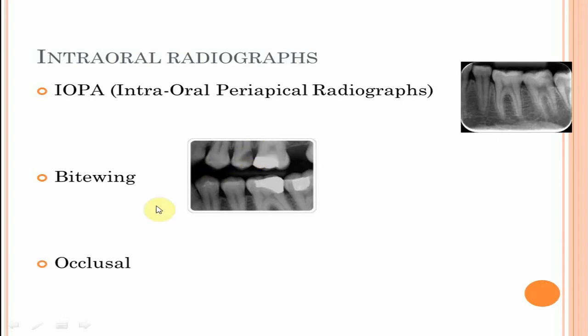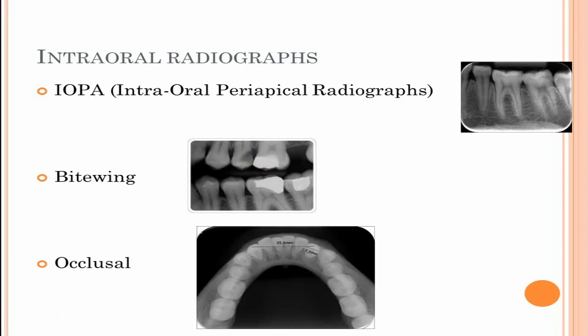Next is the occlusal radiograph, used to show larger areas of the maxilla or mandible than may be seen on a periapical radiograph. These films are used to obtain right-angle views to periapical views and to see lesions on the palate, impacted teeth, submandibular salivary stones and other pathologies.